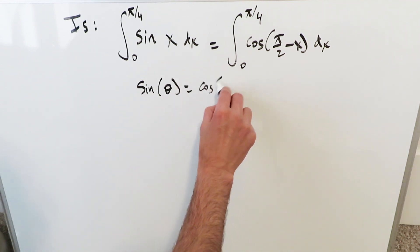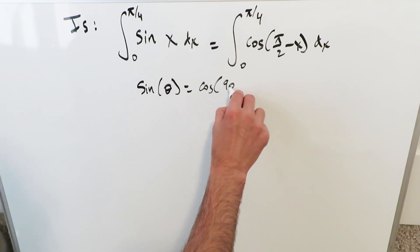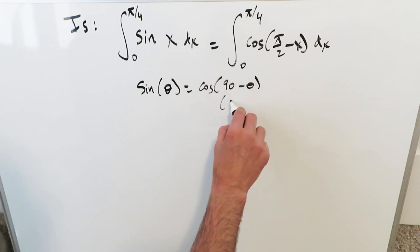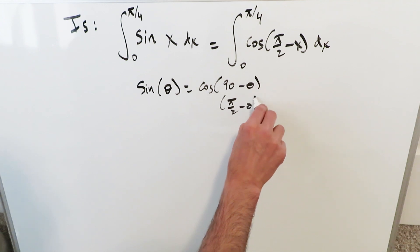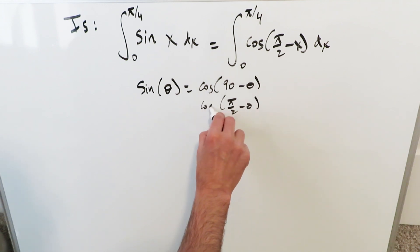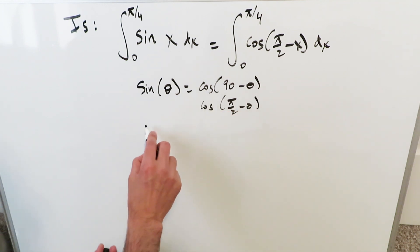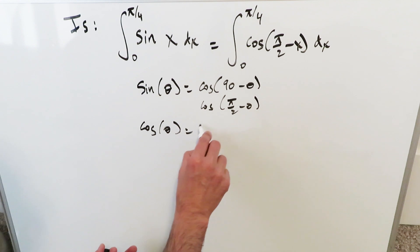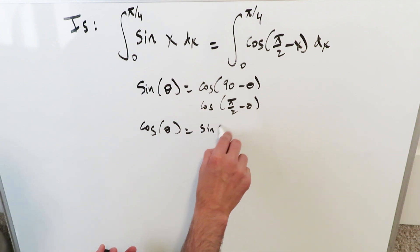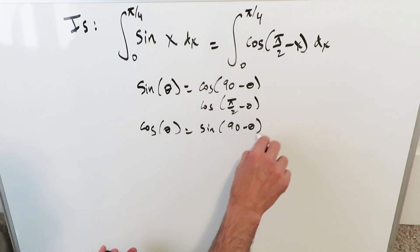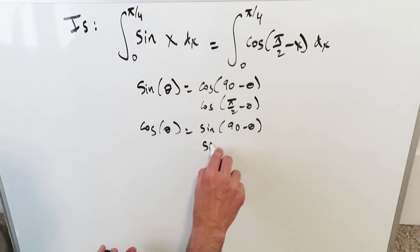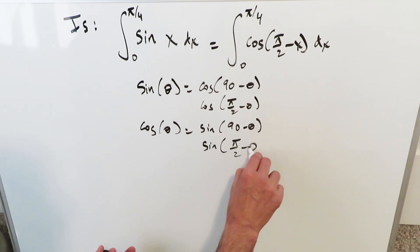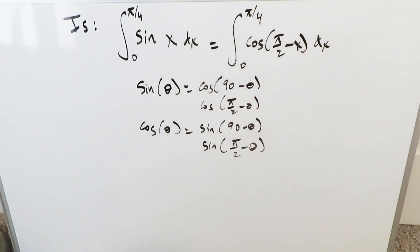The sine of a specific angle is equal to the cosine of its complement. You can either do 90° − θ in degrees, or π/2 − θ in radians. Conversely, the cosine of a specific angle equals sine(90° − θ), or in radians sine(π/2 − θ).